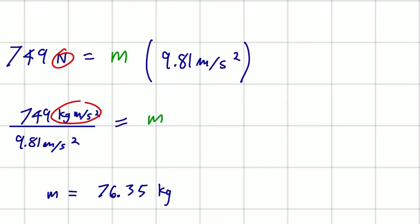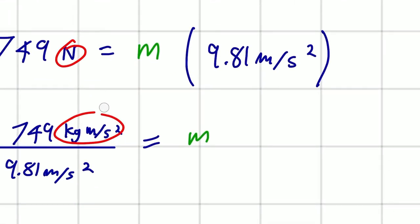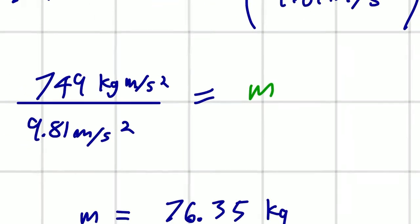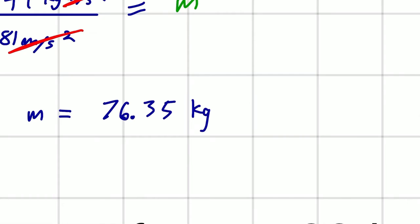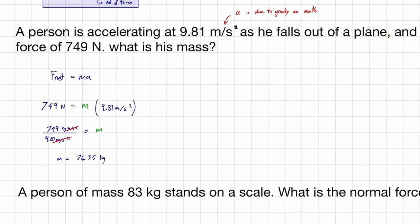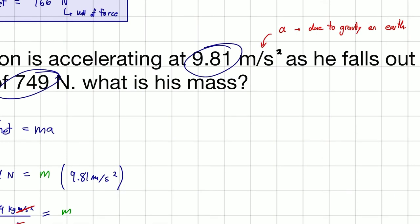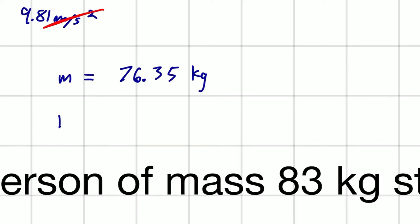So now when we're looking at this division here, we have a meters per second squared and a meters per second squared. They actually cancel out. So that's why we're just left with our kilograms. So mass is equal to 76.35 kilograms. But before we give our final answer, notice the values we're given have three significant digits. So our final answer, we're going to write with three significant digits. And that's our final answer.